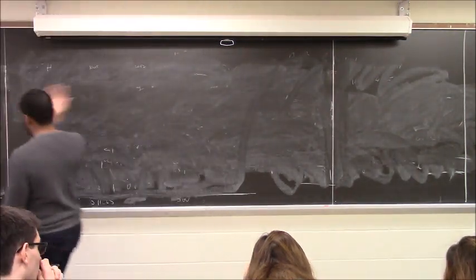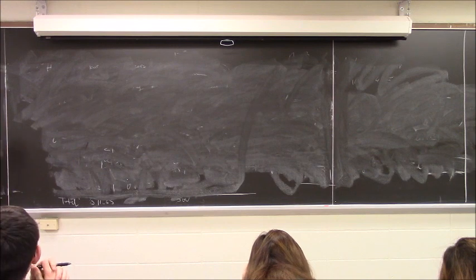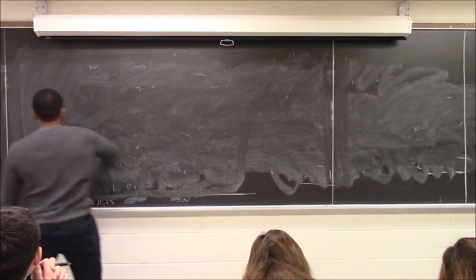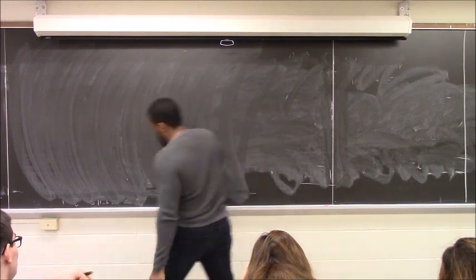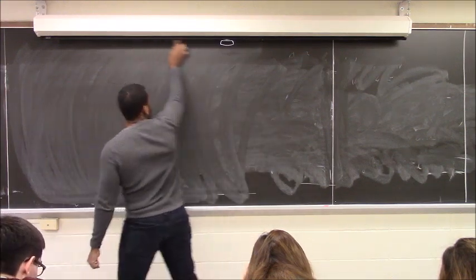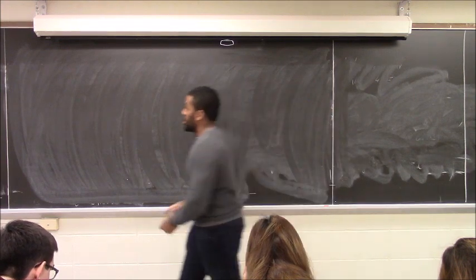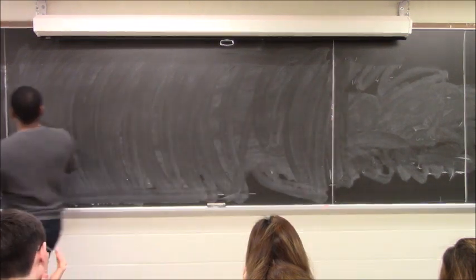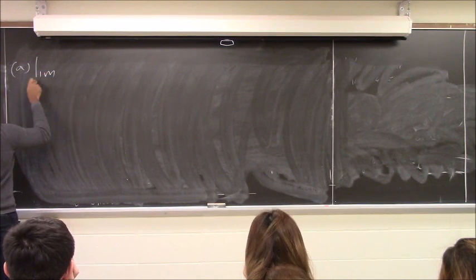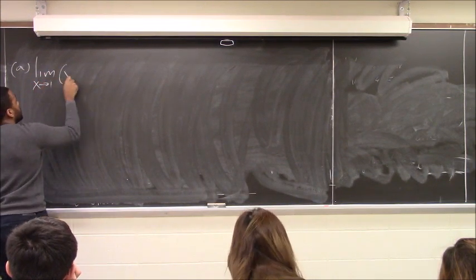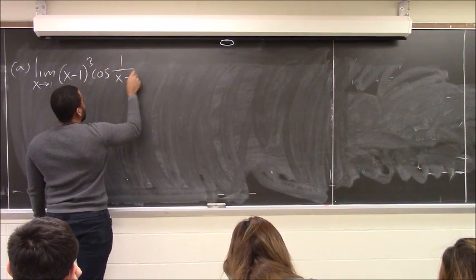Okay, so let's jump in. Someone tell me how to do the first one. The first one was: limit as x approaches 1 of (x minus 1) cubed times cosine of 1 over (x minus 1).